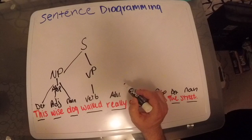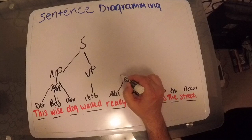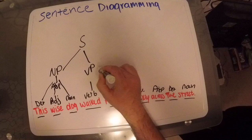Then we have our two adverbs, really and quickly. They go together to make our adverb phrase, and that connects to the verb phrase.